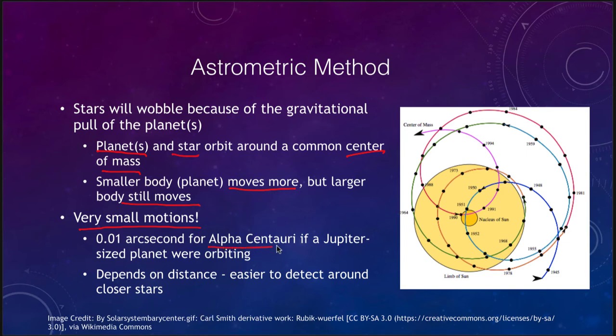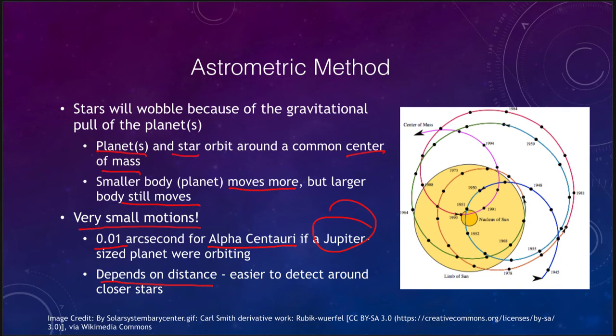For Alpha Centauri, the nearest star to us, a Jupiter-sized planet orbiting it would give a shift of 0.01 arc seconds. That is detectable — we can detect even smaller motions — but it's extremely small. This is for the nearest stars; if a star is further away, it's harder and harder to detect these motions with accuracy. The astrometric method significantly depends on distance: motions are easier to detect if the star is close to us.